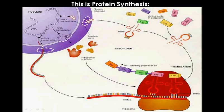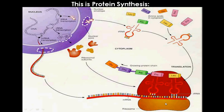The messenger RNA then travels out of the nucleus where it is attached to a ribosome. The ribosome is broken into two subunits. This red circle or oval represents the large subunit, and this yellow or gold colored subunit makes up the small subunit of the ribosome.